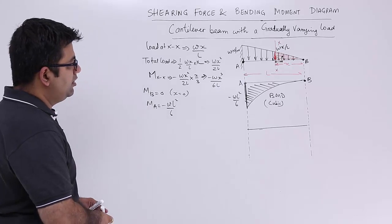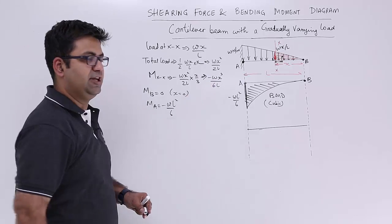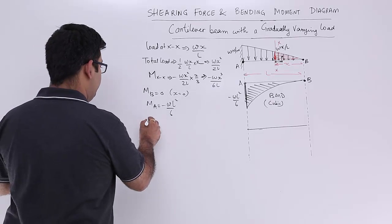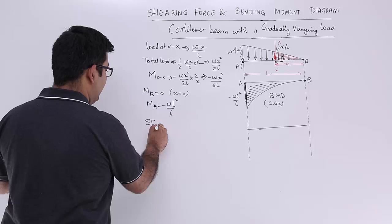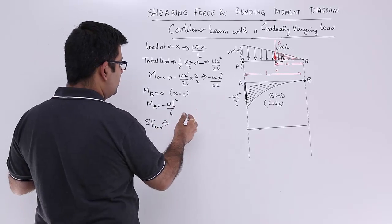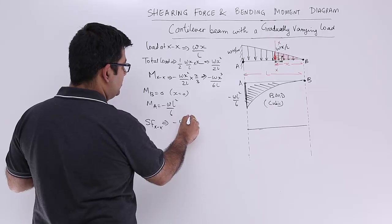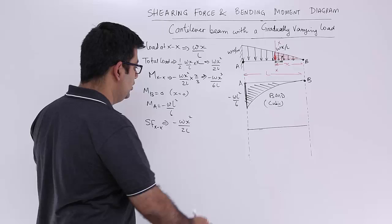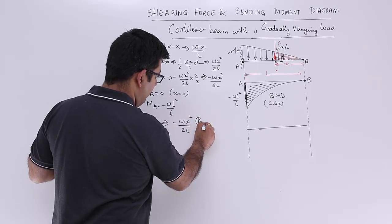Alright, so now after this, let's move to the shearing force variation. So the shearing force at XX, this is the load. So load is how much? Minus WX square by 2L. So this shows a parabolic variation.